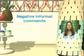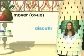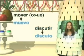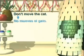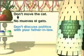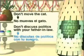Now let's look at the negative informal command forms of ER and IR verbs. We'll use mover, a stem-change verb meaning to move, and discutir, to discuss. Again we take the yo forms: muevo and discuto. We knock off the O's and add AS to the tú form and an accented ÁIS to the vosotros form. Don't move the cat: no muevas el gato. Don't discuss politics with your father-in-law: no discutas de política con tu suegro.